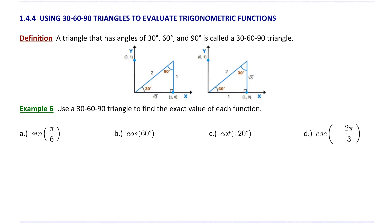Just like we used special 45-45-90 triangles to evaluate trigonometric functions for multiples of 45 degrees or pi over 4, we can also use a special 30-60-90 triangle to evaluate trig functions at multiples of 30 degrees or 60 degrees, or multiples of pi over 6 or pi over 3.